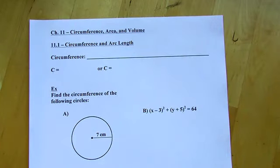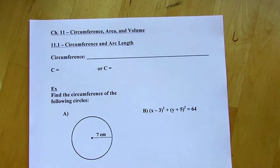As always, there will be a link to the note-taking guide in the description below. Alright, chapter 11 is called Circumference, Area, and Volume. 11.1 is Circumference and Arc Length.